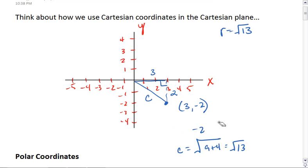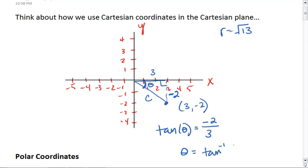We could then figure out the angle, this angle theta. And please remember that this vertical height is actually a negative 2. And we see that tangent of theta, which is opposite over adjacent, is negative 2 over 3. So theta equals tan inverse of negative 2 thirds.